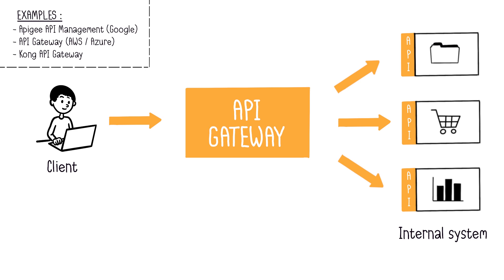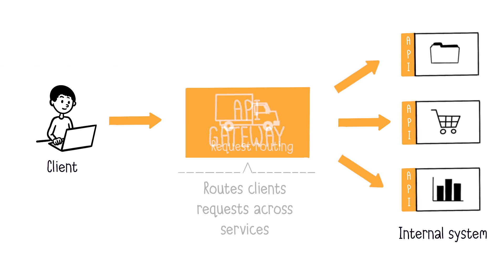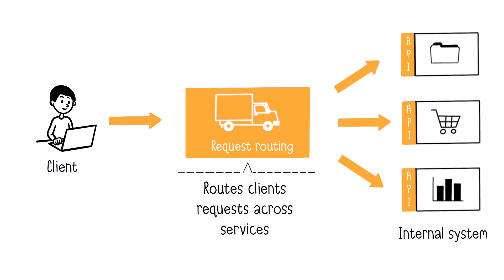The API Gateway performs various cross-cutting tasks. It's not an exhaustive list, but here are the main ones. Firstly, the API Gateway acts as a reverse proxy, routing client requests to the requested services. API gateways can also distribute incoming requests across multiple back-end servers or microservices.